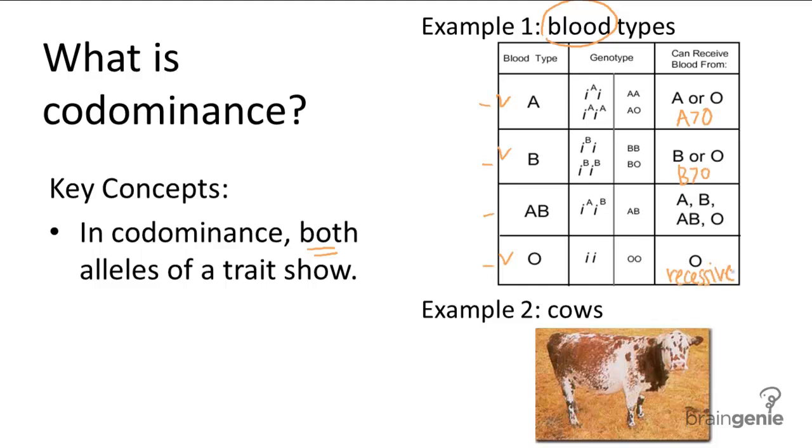So the genotypes that code for each of these blood types: AA and AO both code for A; BB and BO both code for B; and only OO codes for O.